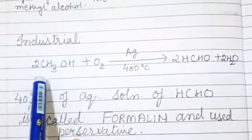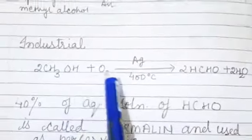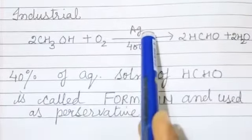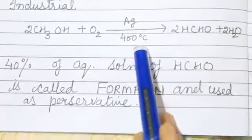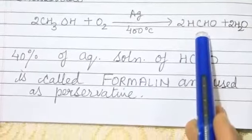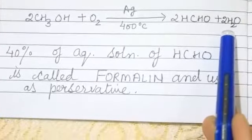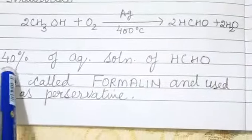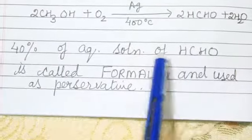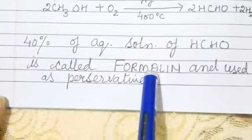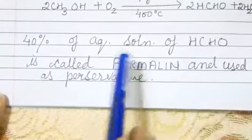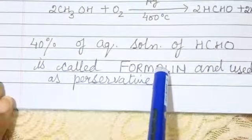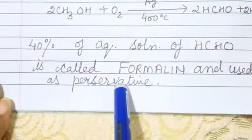Now, come to industrial preparation. When methanol reacts with O2 in presence of silver at 400 degree centigrade, it forms two molecules of formaldehyde with two molecules of water. 40% aqueous solution of formaldehyde is called formalin and is used as preservative.